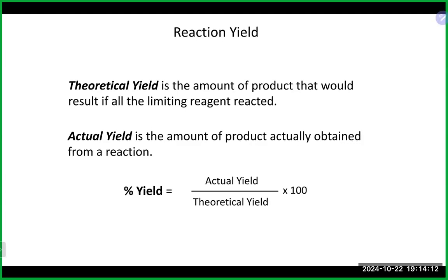The next thing we're going to talk about, in relation to stoichiometry problems, is reaction yields. There are really two or three types of yields we come across. The first is your theoretical yield, which is the maximum amount of product you should make if you started with a certain amount of reactants and everything went perfectly — no side reactions, no spills. That is technically how much product you should produce.